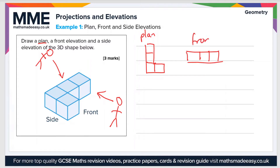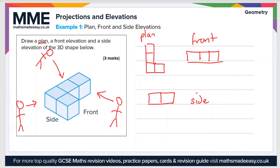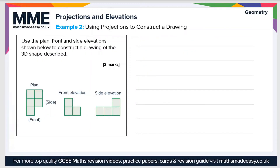Finally, the side elevation is if you were stood here looking in this direction. You would see a flat rectangle, but this time it would only be two squares wide because you're looking at the base of the L-shape. That's the side elevation — those are all three elevations and that will get you all three marks.